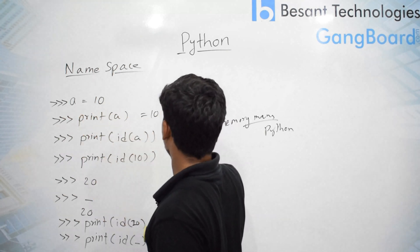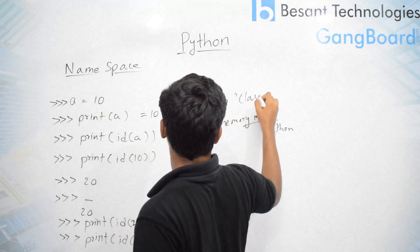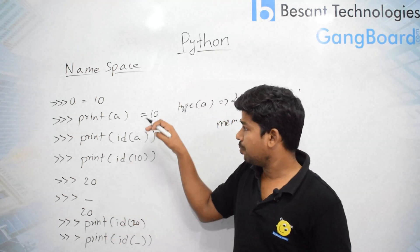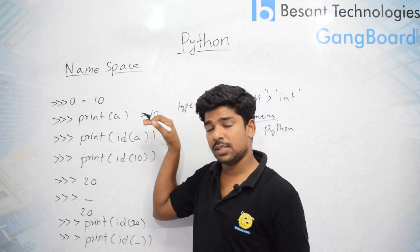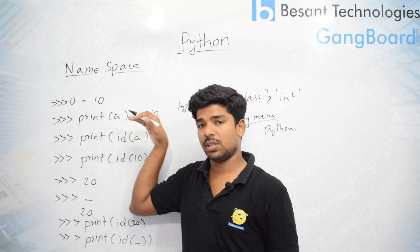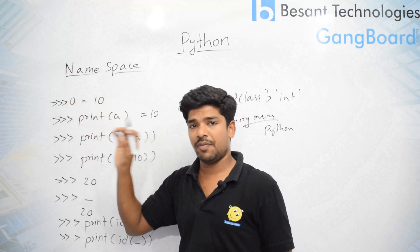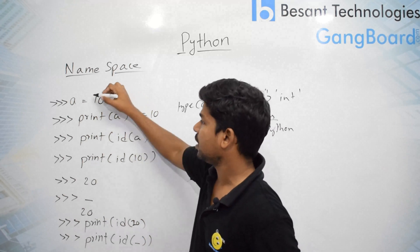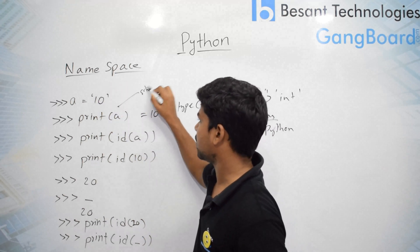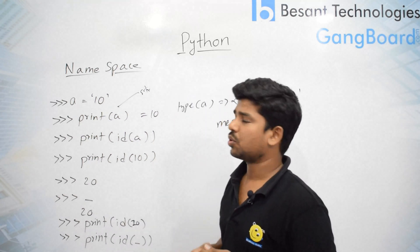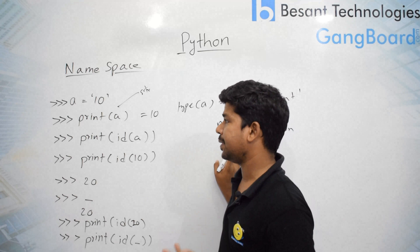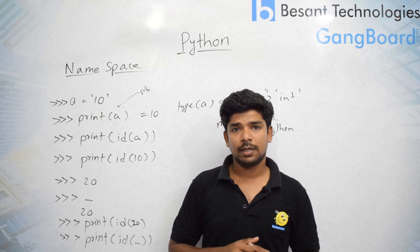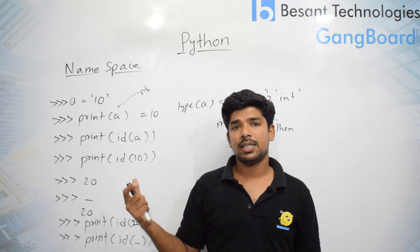If you check the type of a, you will get 'class int'. That means the variable type is defined based on the right-hand side value. The left-hand side variable name is assigned based on the right-hand side value. So if it is a float it will be a float, if it is an integer it will be an integer, if it is a string it will become a string. Python's background is handling all of this.